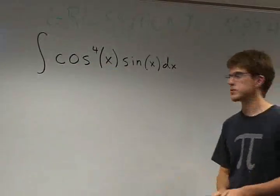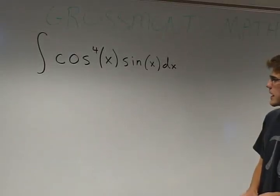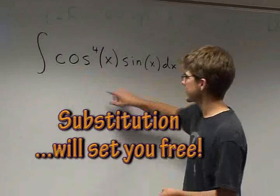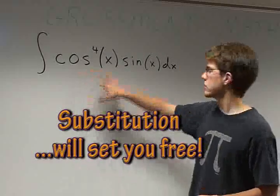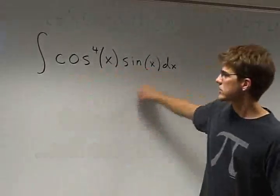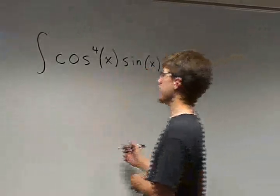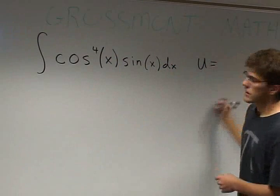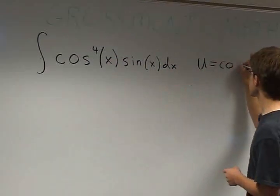The first thing that we would do is we would see that this is a substitution problem, because you can see that you can manipulate this so that you have sine x dx from cosine. So you pick a u, which in this case would be the cosine of x.